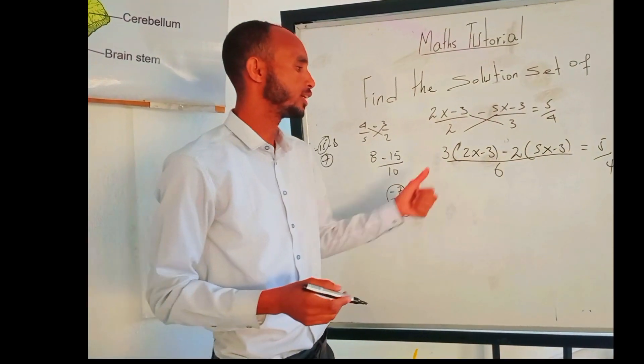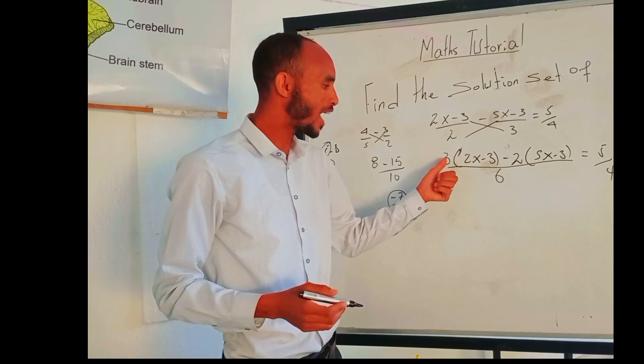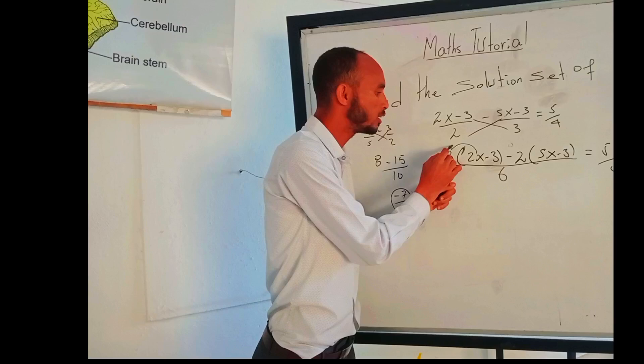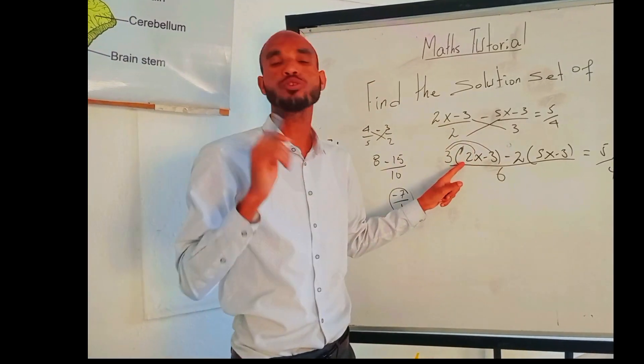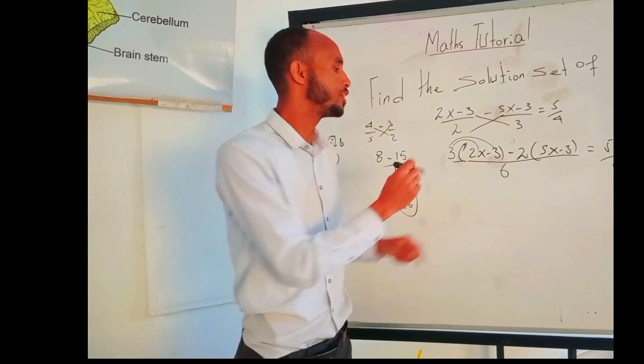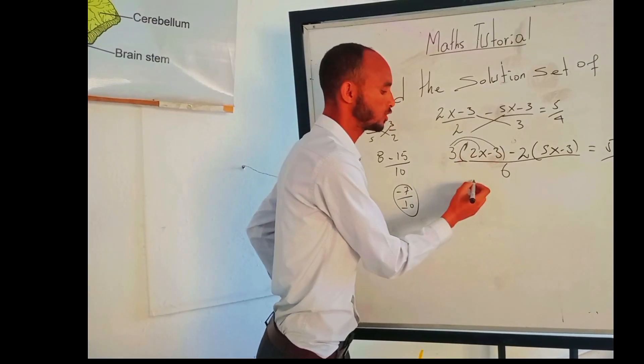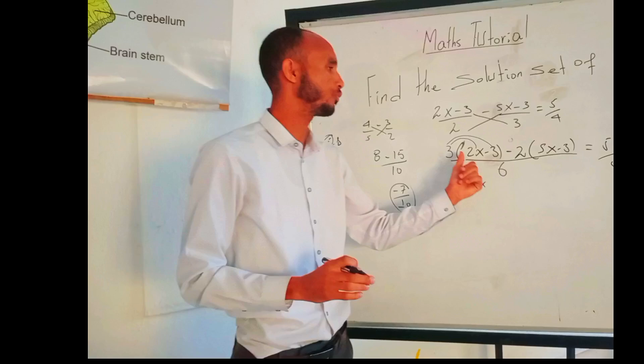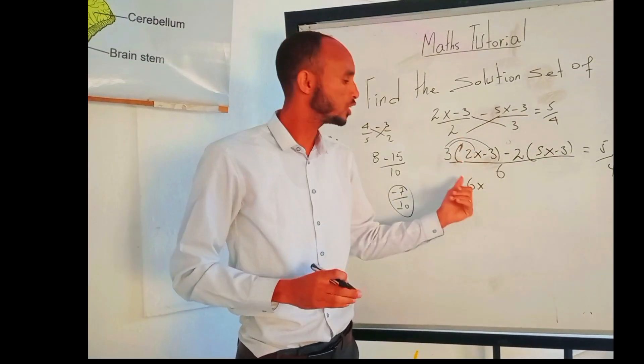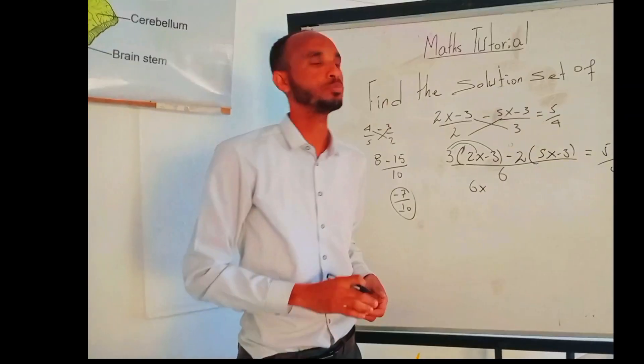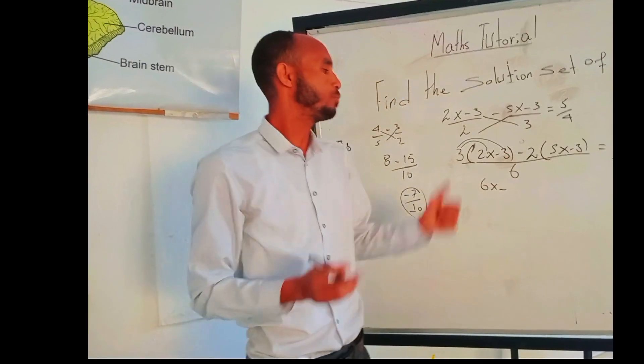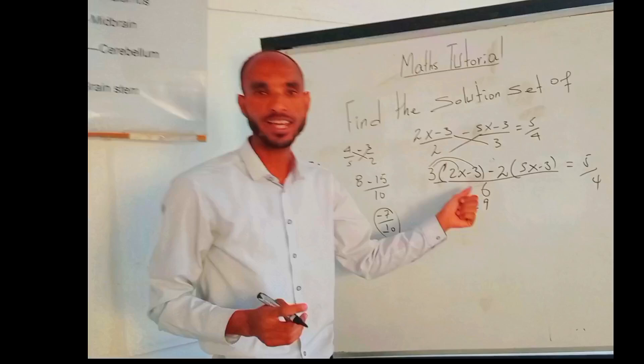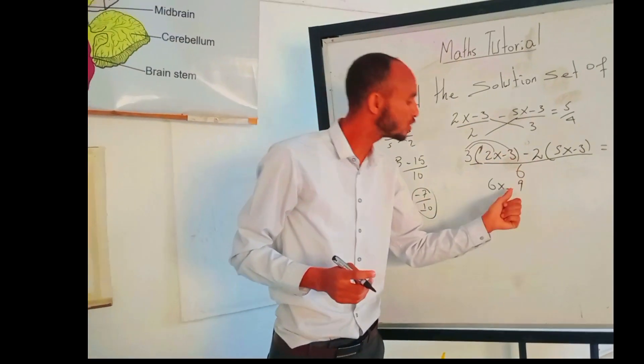The next step is this bracket 3 is multiplying 2x and 3 because you have to apply distributive property. 3 times 2x is 6x, and then put the negative sign before multiplying the number, so 3 times 3 is 9. One more reason is 9 because positive times negative is negative.